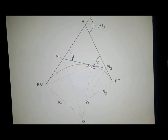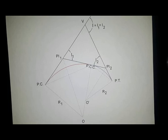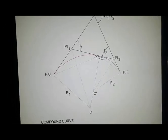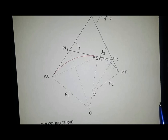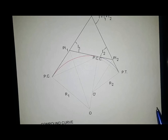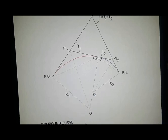This video will discuss and explain the second type of circular curve, known as a compound curve. By definition, a compound curve is a combination of two or more circular curves or simple curves having different values of radius, whose centers lie on the same side of the curve, as shown in the figure.